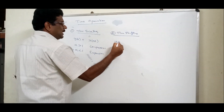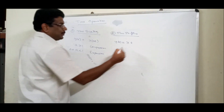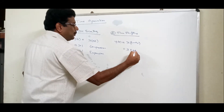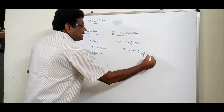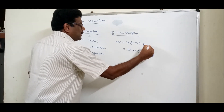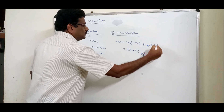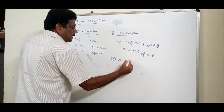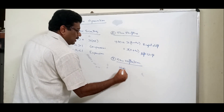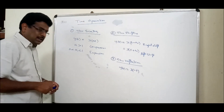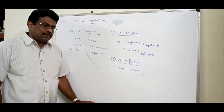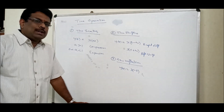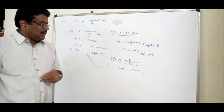Next is time shifting. y(t) = x(t − t₀) means the signal is shifted to the right side, while x(t + t₀) means the signal is shifted to the left side. The third property is time reflection, which is y(t) = x(−t). You may recall this from even and odd signals where you made this reflection. So totally three types: scaling, shifting, and reflection.